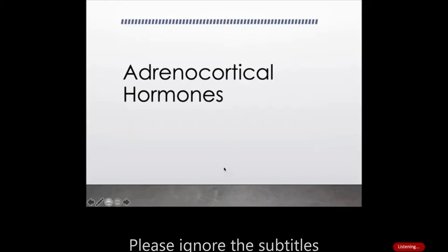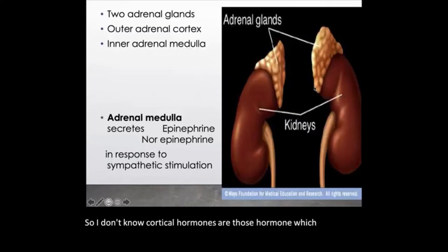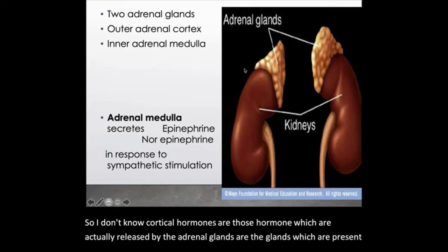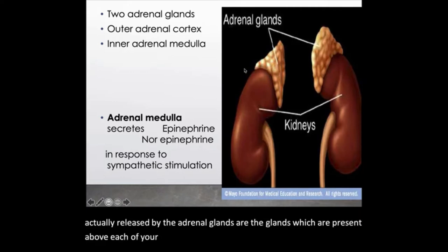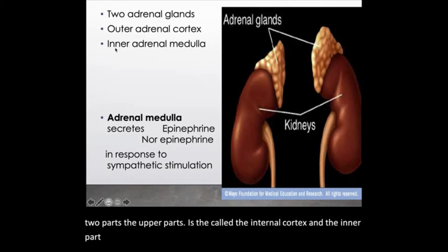Adrenocortical hormones are those hormones which are actually released by the adrenal glands. Adrenal glands are the glands which are present above each of your kidneys. We grossly divide adrenal glands into two parts: the outer part is called the adrenal cortex and the inner part is known as the adrenal medulla.